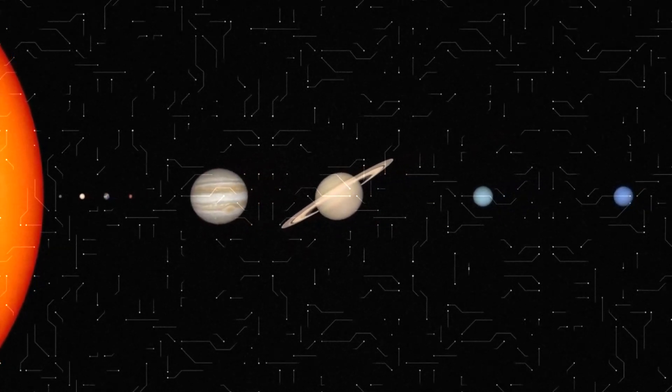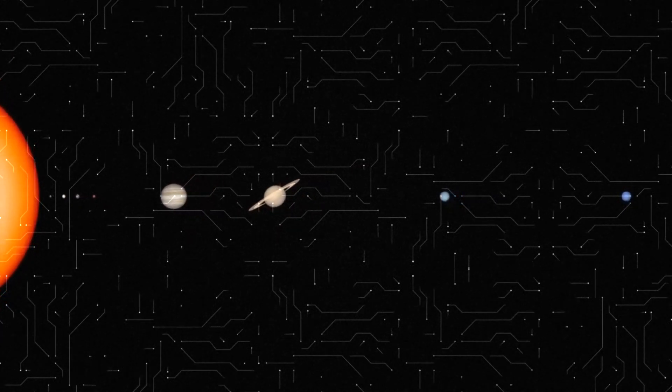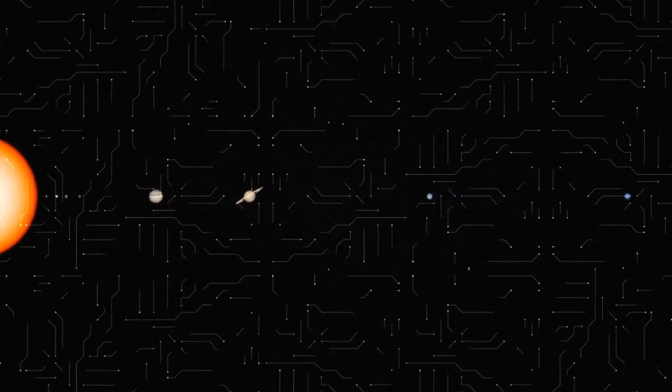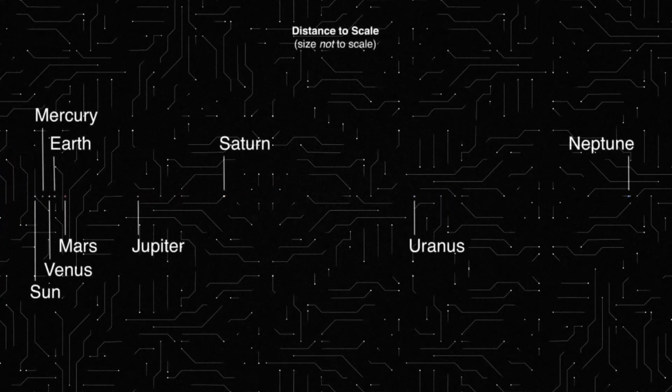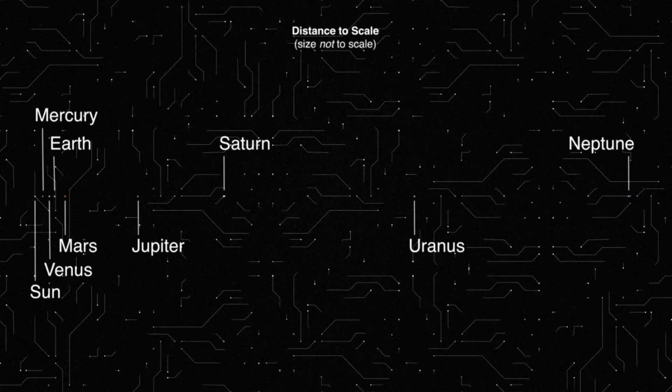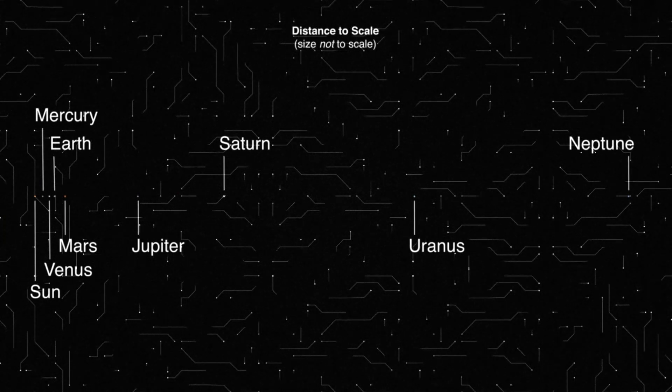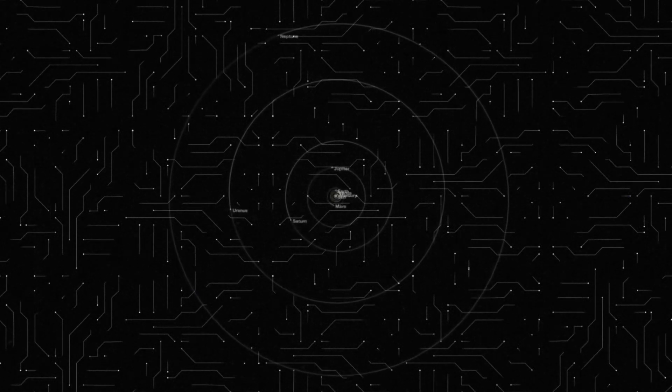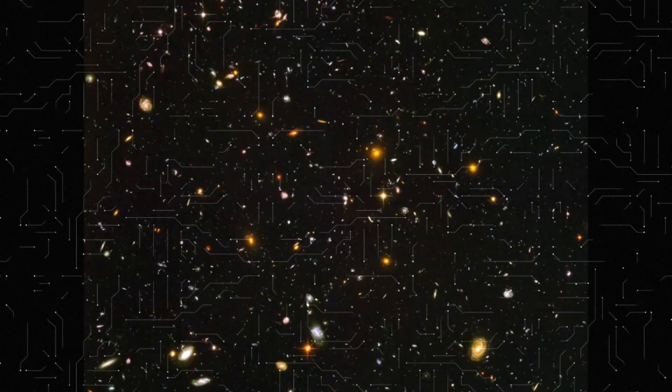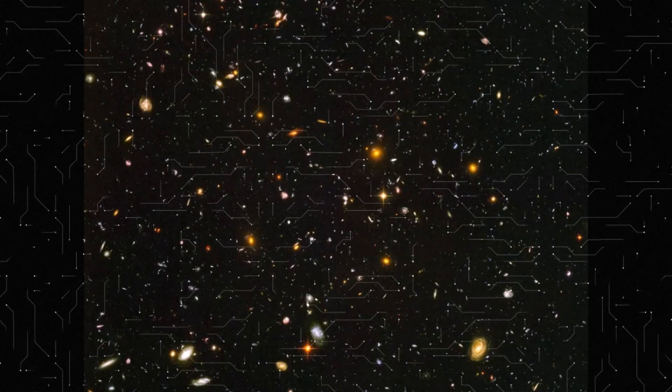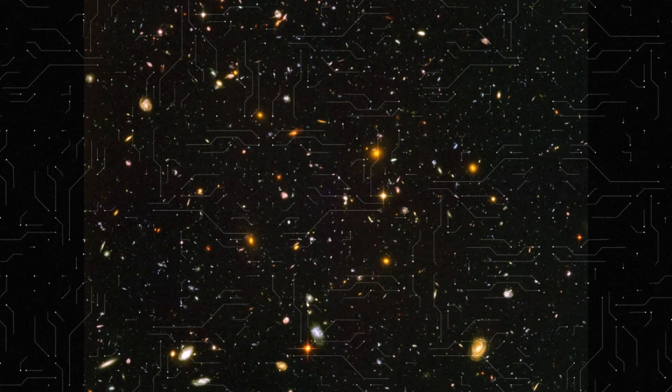6. Uranus. The Voyager 2 mission in 1986 was the only mission to fly past Uranus and provide the first detailed images of its atmosphere and moons. 7. Neptune. The Voyager 2 mission in 1989 was the only mission to fly past Neptune and provide valuable data on its atmosphere, rings and moons. All of these missions have provided us with unique and valuable data on the planets of the solar system, and some of them continue to explore and send out new missions to expand our knowledge of these amazing worlds.